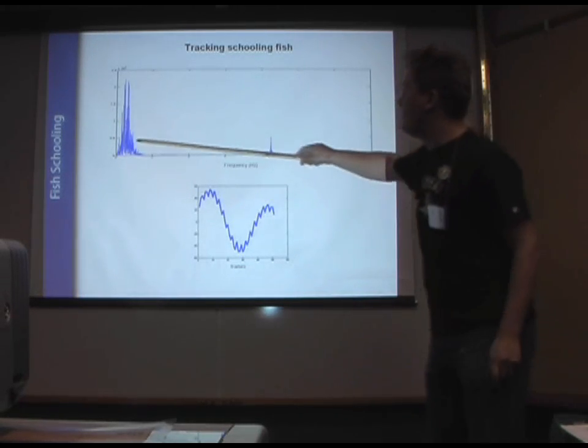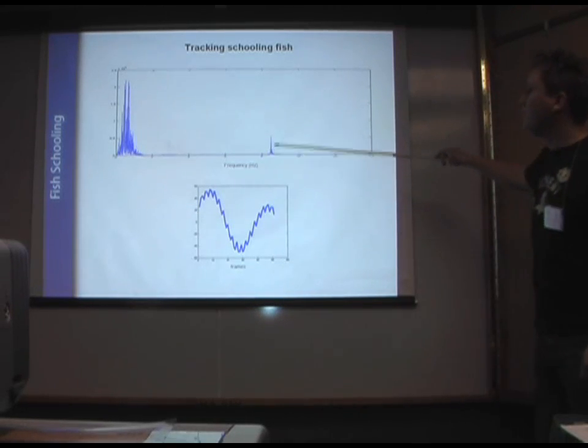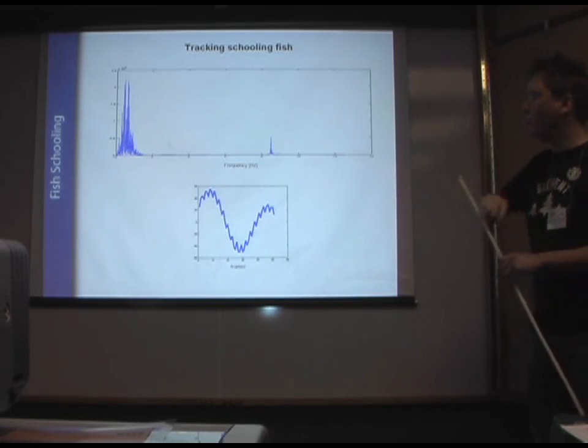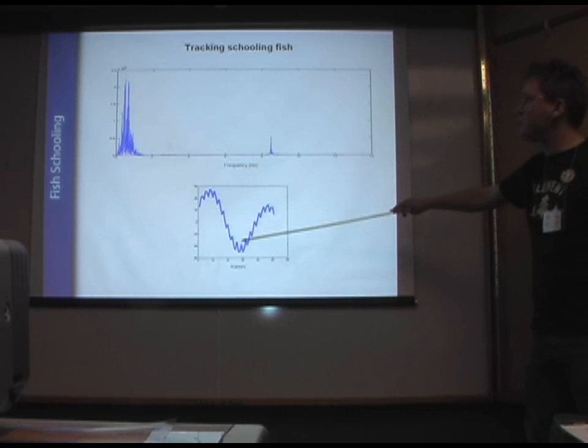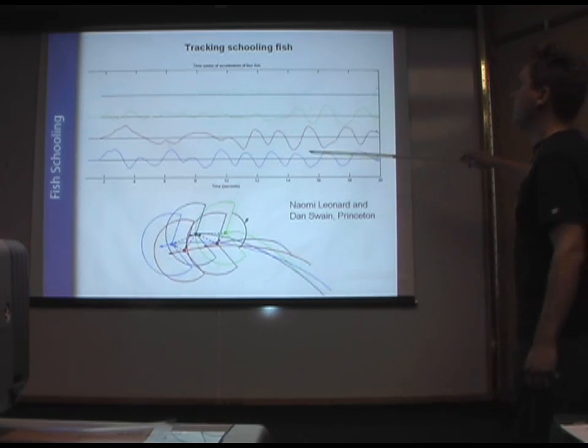So we can look at the frequency, for example. It's about one hertz, this oscillating frequency. And there's a much higher frequency here, and this is the tail beats of the individuals. So they're constantly producing these tail beats, but they're adjusting the force they produce to produce a very near sinusoidal function.